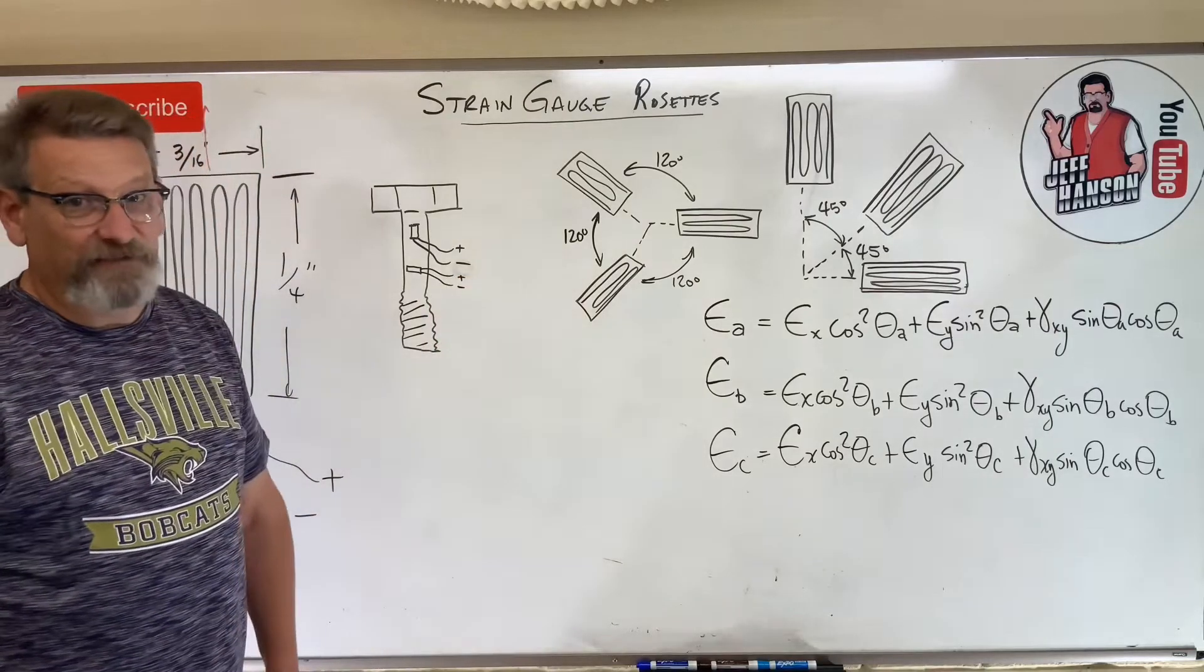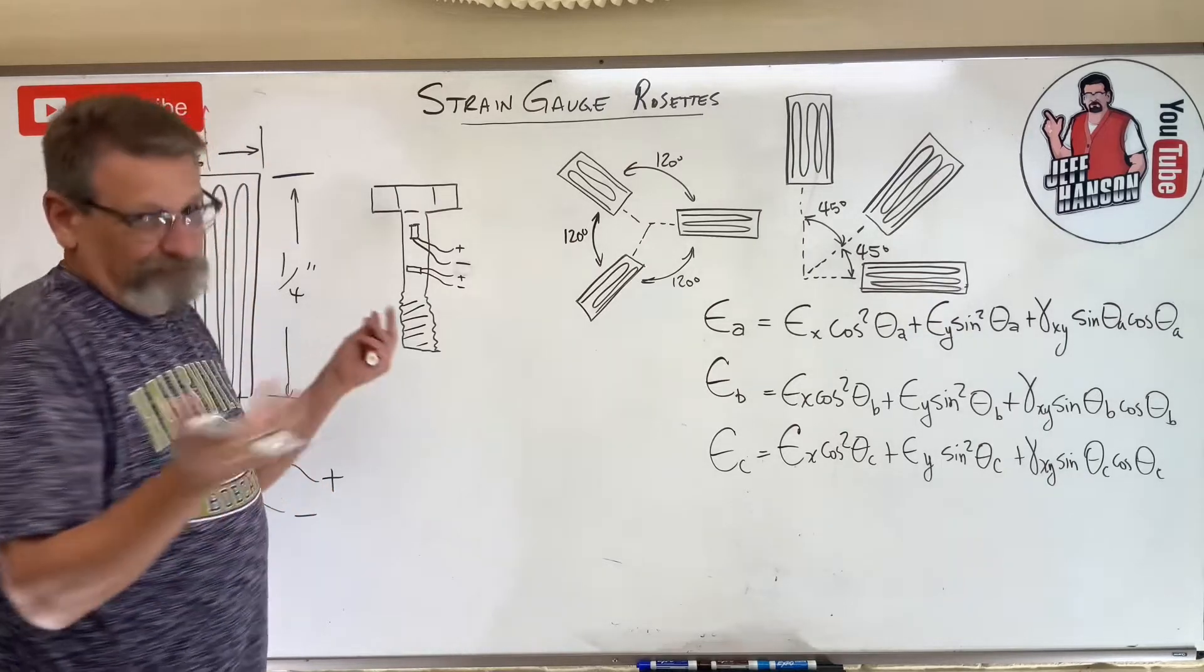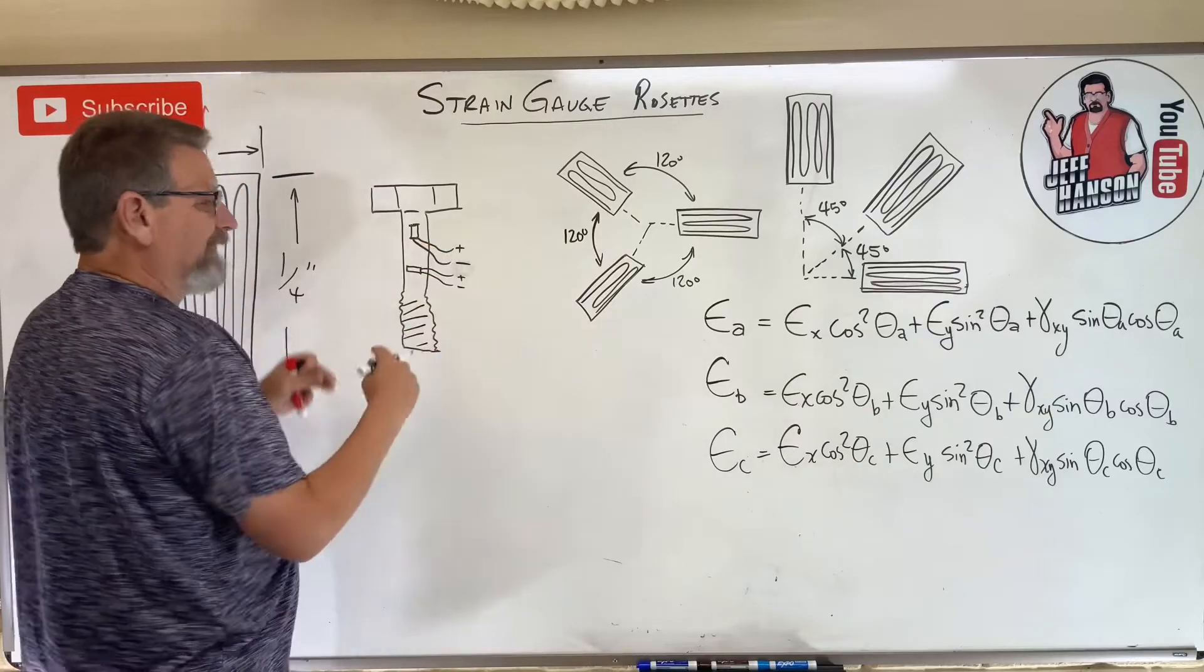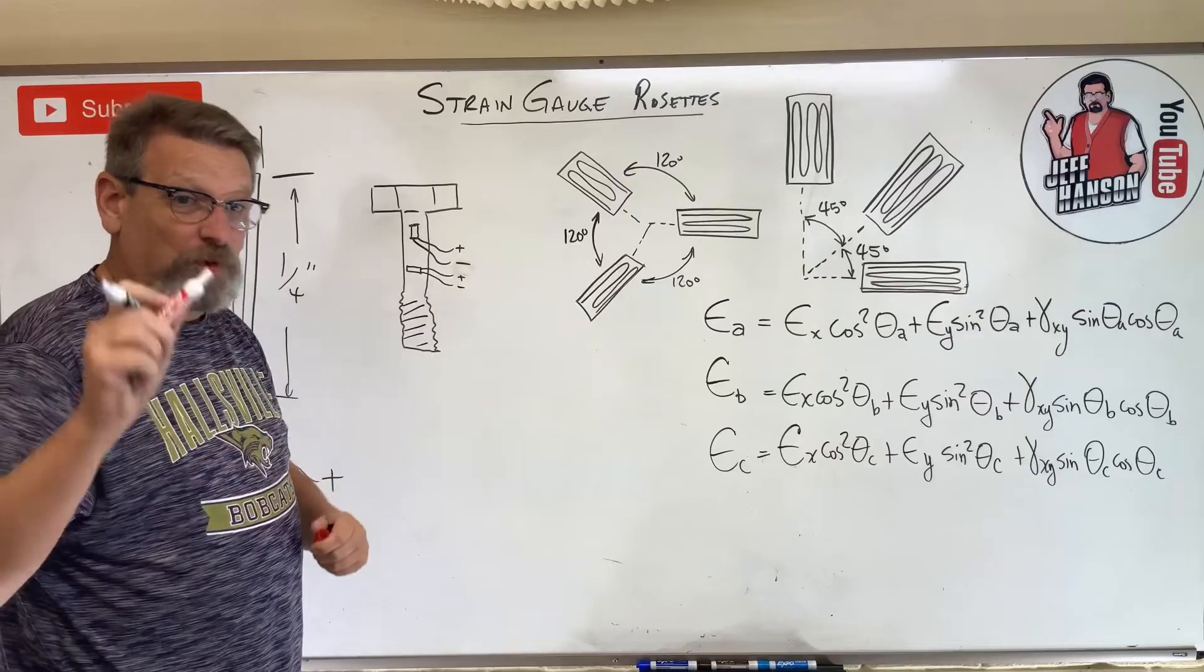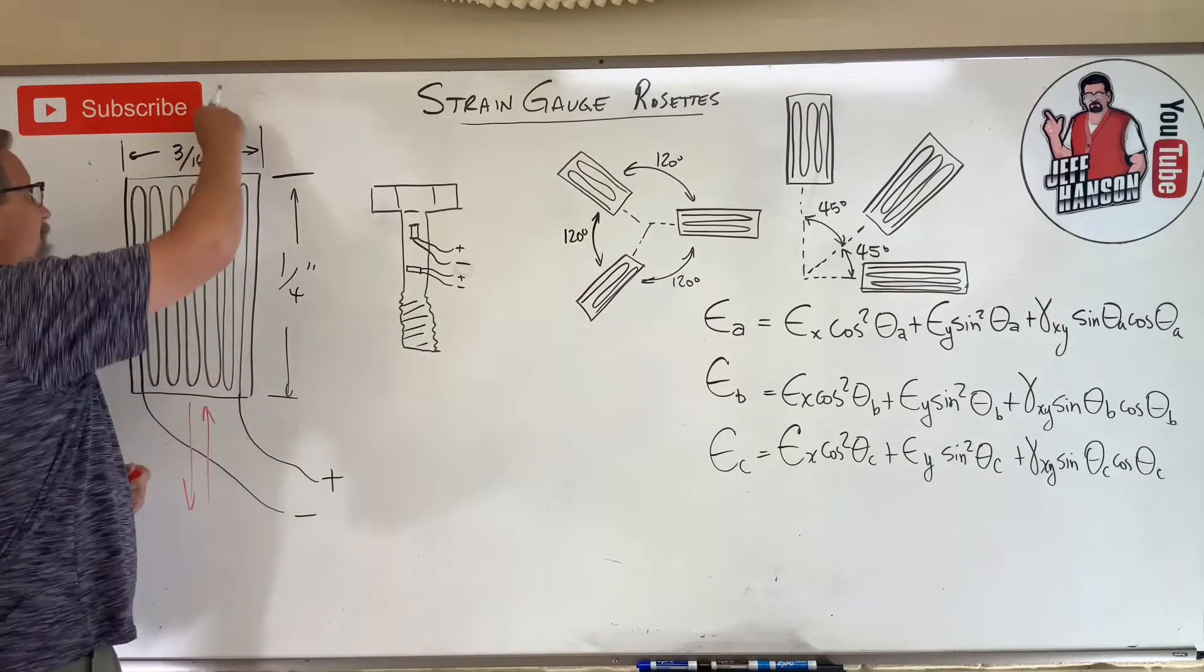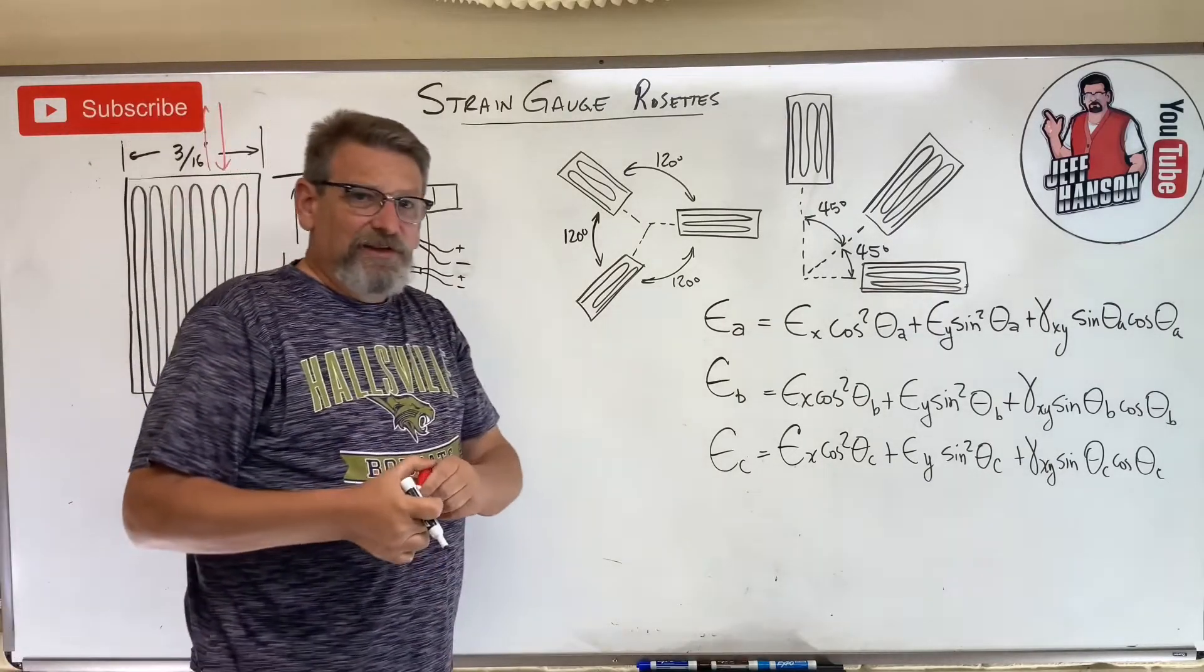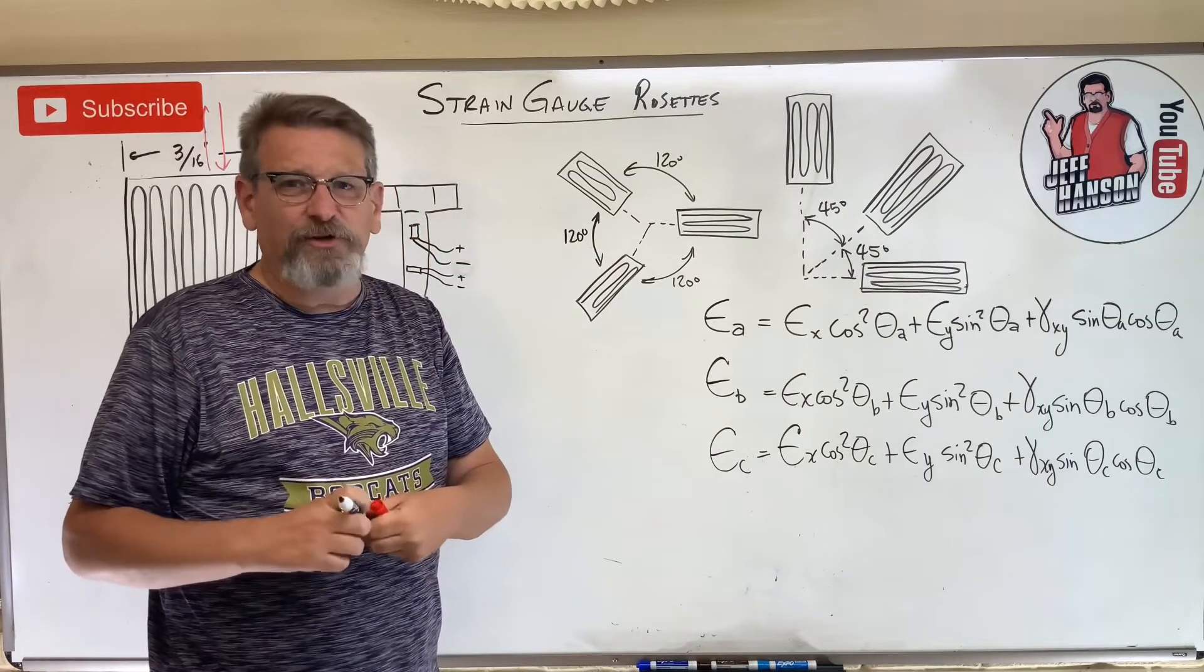Well, it's not going to measure very much. I mean it'll measure a tiny amount because Poisson's ratio, right? If it stretches this way, it contracts that way. That's a good point - the strain gauge will work in both directions. So it will also work if there is a compression applied to the strain gauge. The strain gauge needs to be put on there in the direction of the stress that you're going to measure.